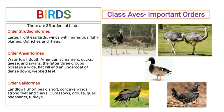Order Struthioniformes includes large flightless birds. Their wings have numerous fluffy plumes that are extensions from the main wing. It includes ostriches and rheas.